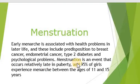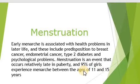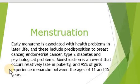The good age for onset will be after 13. However, from the age of 11 to 15, menses usually begin.